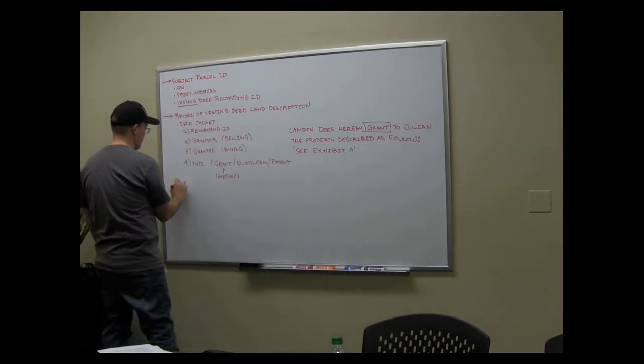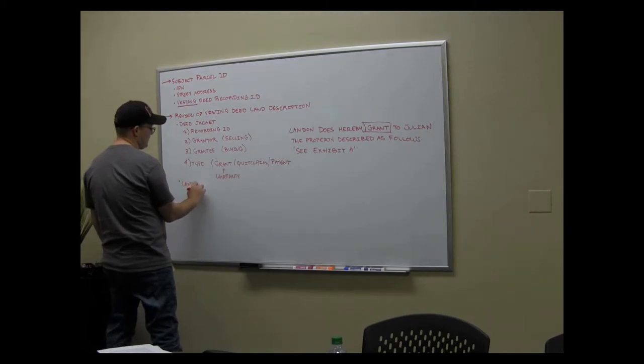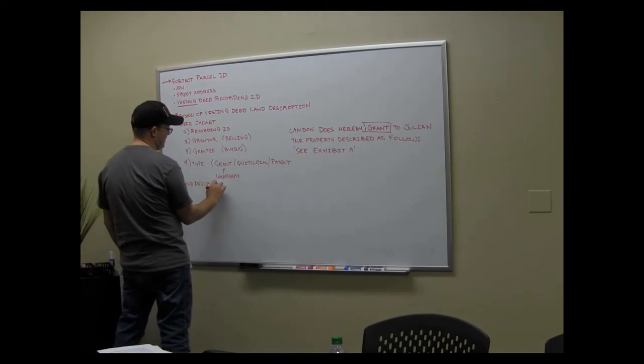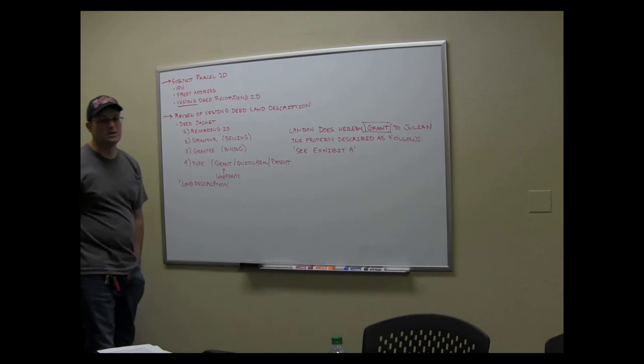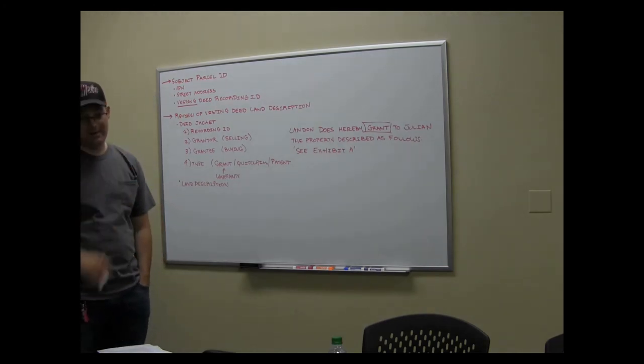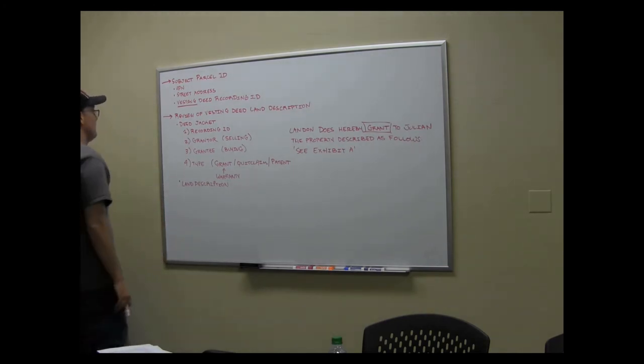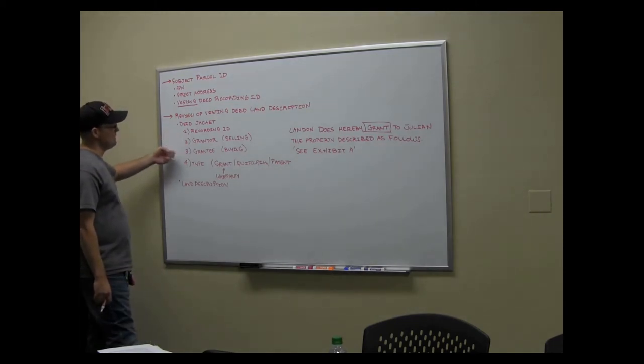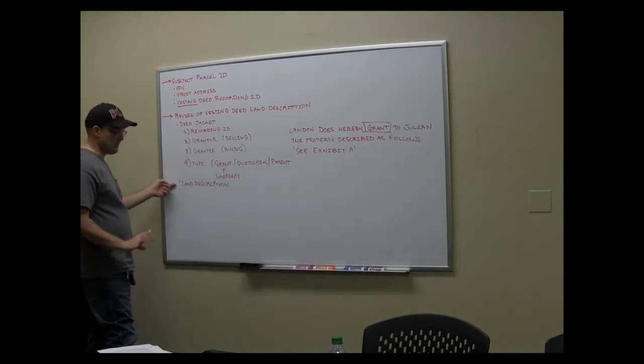Then there's the part that the surveyor does. That's what I call the land description. Everybody else calls it a legal description. I don't like that term. I like land description better because that's what it is. It's a description of land. That's what we read when we're going to cover a deed. So you know what that is, right? That's the land description. So in the note, you're going to tell me the recording ID, the grantor, the grantee. You're going to tell me the type of transfer. And then you're going to give me just some basic, really basic information about the land description.